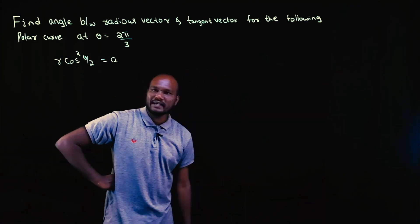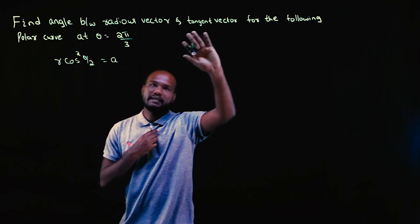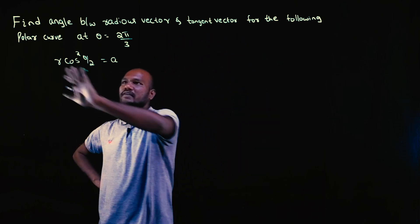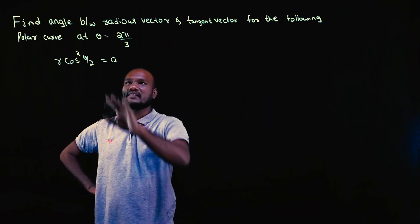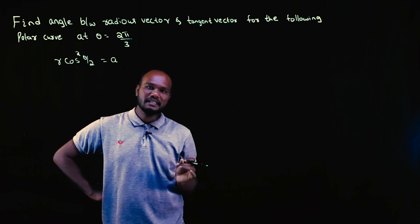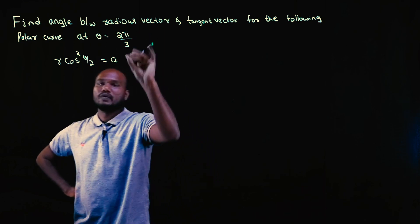Okay, what is given in the question? We have to find angle between radius vector and tangent vector for the given polar curves. The extra thing they are given is the value of theta. So phi will come in terms of a number.